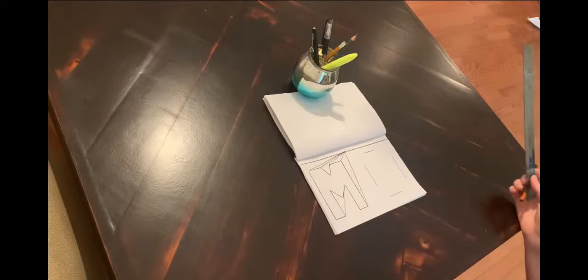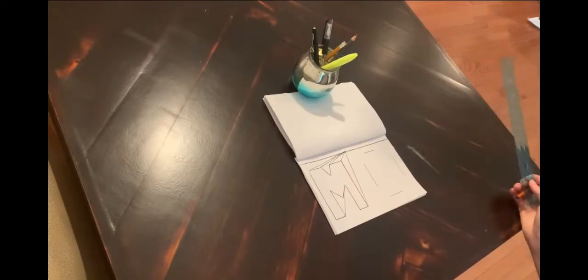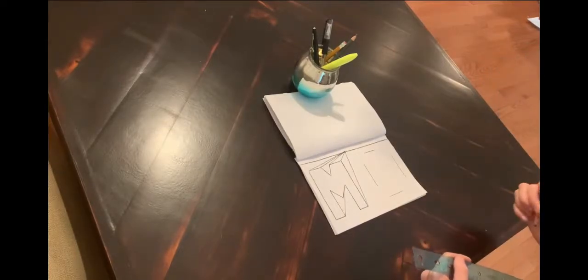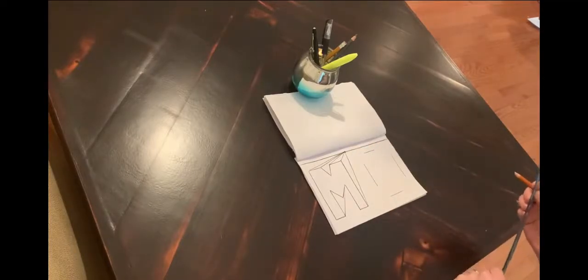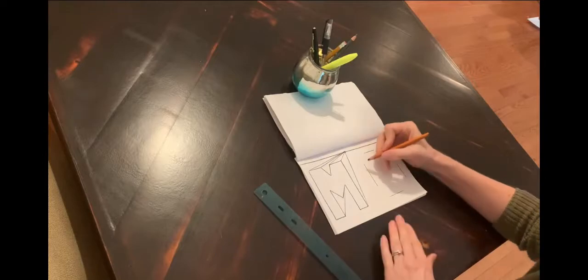This is a trick for drawing a round letter and that is to use straight lines whenever possible and then round it only when you need to round it. So check this out.